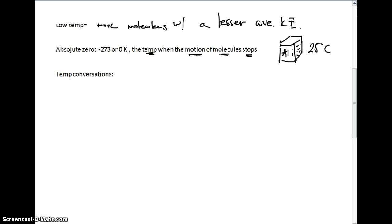But if we cool this block of aluminum down cold enough, and the temperature measurement is negative 273 degrees Celsius, or we say that zero Kelvin, which is a new temperature scale that we're going to talk about, the motion of these molecules that are vibrating will actually stop.